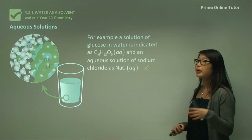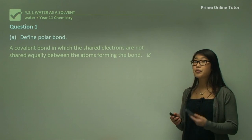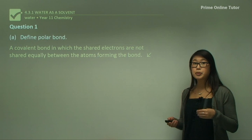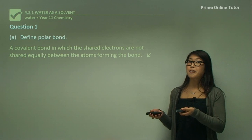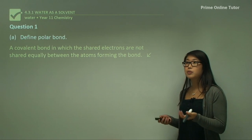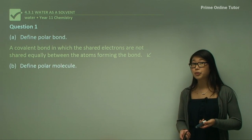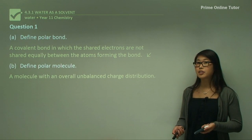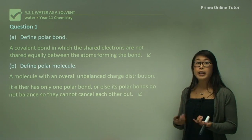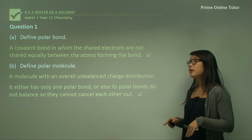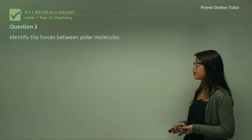Question one: define a polar bond. It's a covalent bond where shared electrons between two atoms are not shared equally — one atom has a greater affinity for the electron, making it slightly more negative on one side. Define a polar molecule: a molecule with an overall unbalanced charge distribution, having one or more polar bonds that don't cancel each other out, giving the whole molecule a slight unbalanced charge.